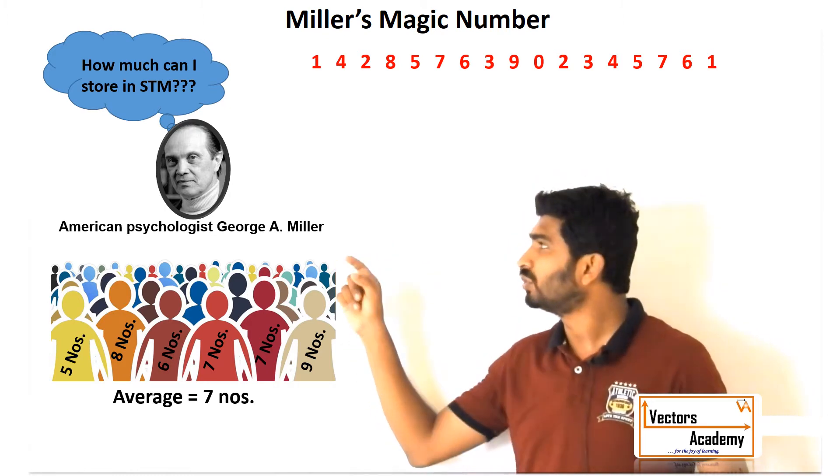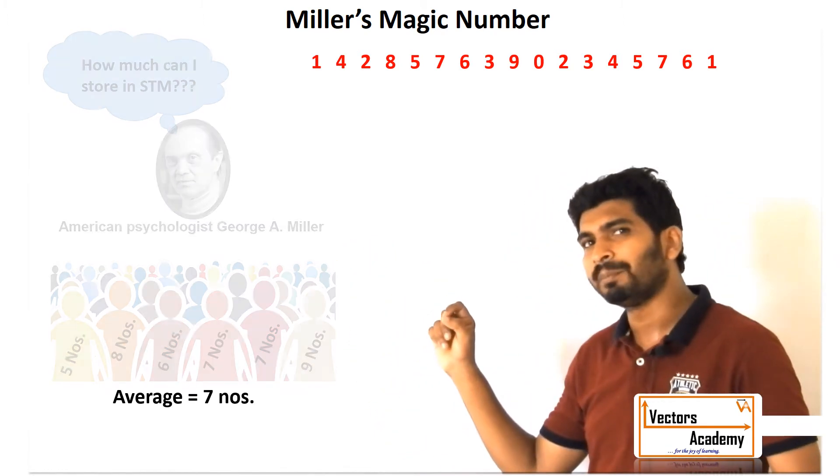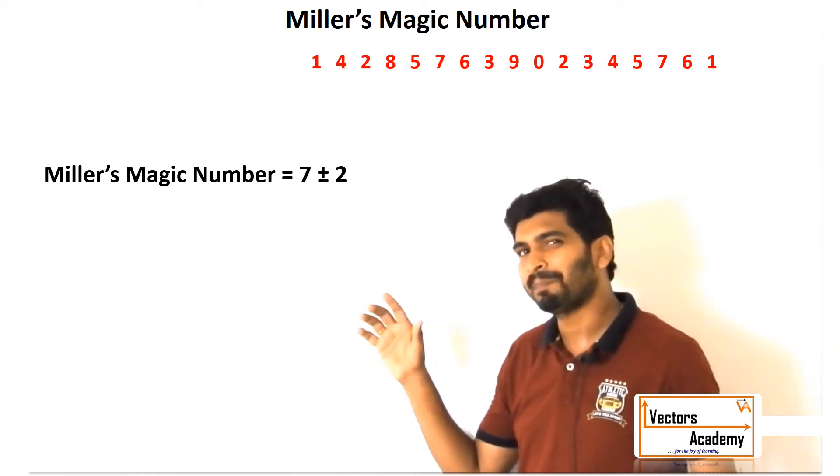He found the average of five and nine, which comes to seven. So he came up with a magic number seven—that is the approximate amount of data an individual can remember in short-term memory.